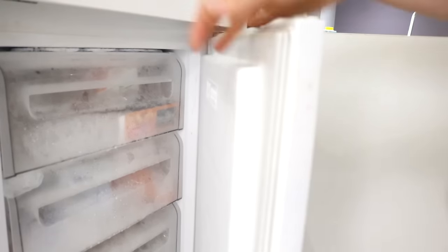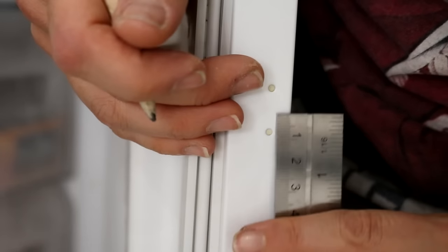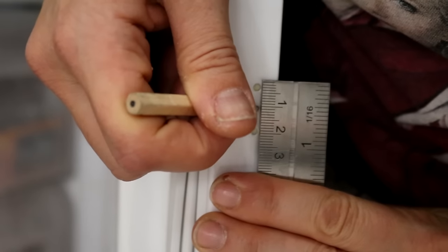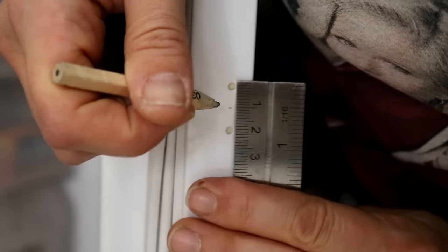You can see the bottom one isn't attached, so it's a bit fiddly. Depending on your integrated fridge and freezer, mine had little indents here for the attachments to go. I'm measuring and marking halfway between these.